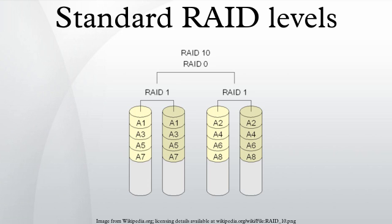Computing parity: two different syndromes need to be computed in order to allow the loss of any two drives. One of them, P, can be the simple XOR of the data across the stripes, as with RAID 5. A second independent syndrome is more complicated and requires the assistance of field theory. To deal with this, the Galois field is introduced, where for a suitable irreducible polynomial of degree, a chunk of data can be written in base 2 where each bit is either 0 or 1. This is chosen to correspond with the element in the Galois field.